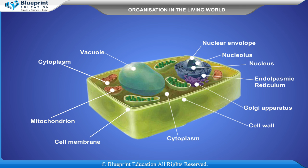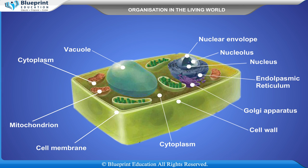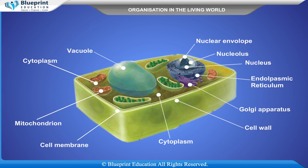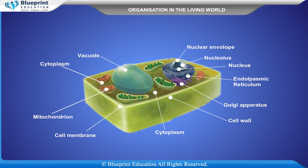A plant cell consists of cell wall, cell membrane, cytoplasm, a large vacuole, a nucleus, and a number of plastids. The nucleus lies at the periphery of the cytoplasm and the vacuole is located in the center.